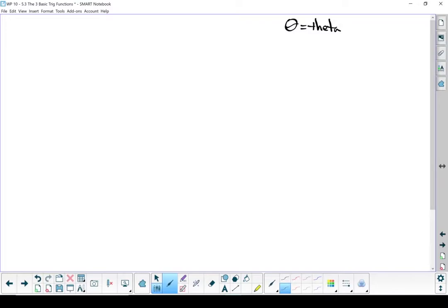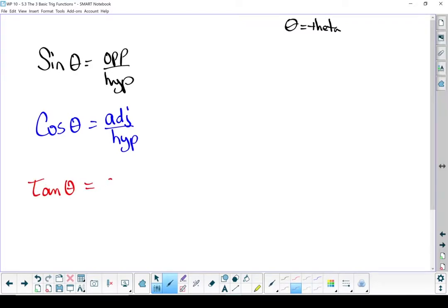It's just like an x. So let's get into our sine, cos, and tan formulas. Sine of theta, that is my opposite side divided by my hypotenuse. Cos of theta, that's my adjacent divided by my hypotenuse. And tan of theta, that's my opposite side divided by my adjacent side.